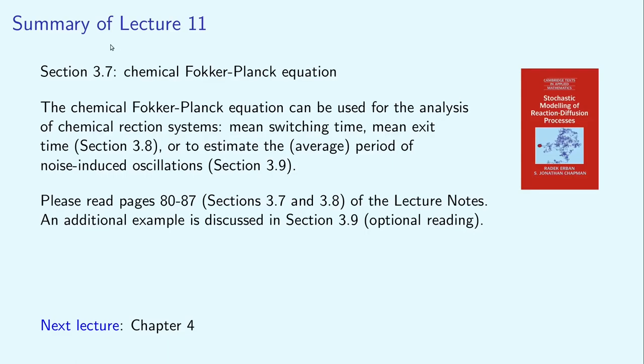This brings me to the end of our discussion of chapter 3, where we discussed the chemical Fokker-Planck equation. The chemical Fokker-Planck equation can be used for the analysis of chemical reaction systems, and there are two sections with examples and illustrations. Please read pages 80 to 87, covering sections 3.7 and 3.8 of the lecture notes, before watching the video of lecture 12. Thank you for listening to lecture 11 of our course on Stochastic Modelling of Biological Processes.